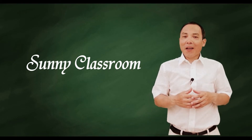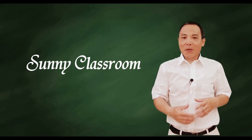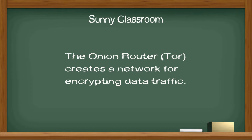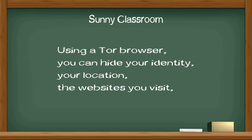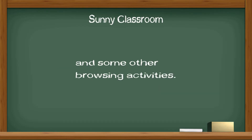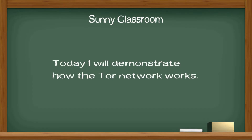Hello, and this is Sunny. Welcome back. The Onion Router creates a network for encrypting data traffic. Using a Tor browser, you can hide your identity, your location, the websites you visit, or some other browsing activities. Today, I will demonstrate how the Tor network works.